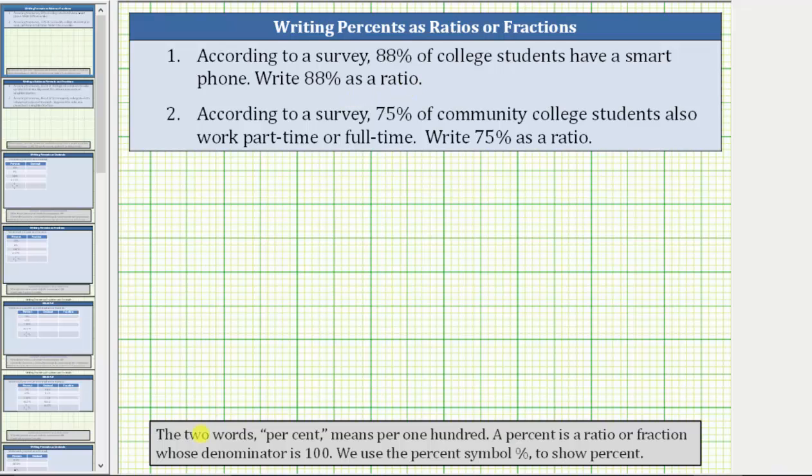Looking at the notes below, the two words percent means per 100, and therefore percent is a ratio or fraction whose denominator is 100. And we use the percent symbol to show percent.